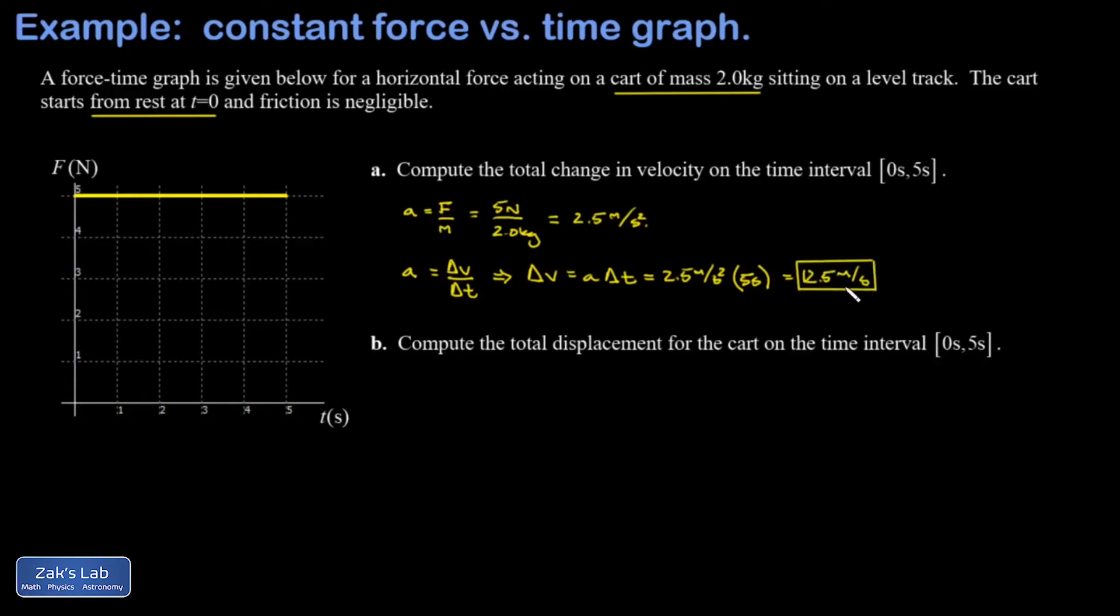Next we're asked to find the total displacement for the cart on the time interval zero to five seconds. To get this done, I'm going to use the first kinematics equation in the list - that's x equals x naught plus v naught t plus one half a t squared.